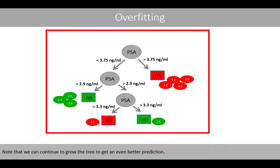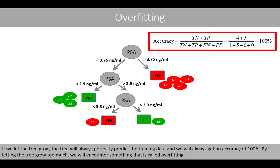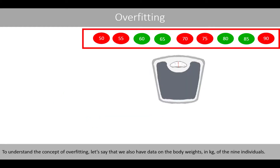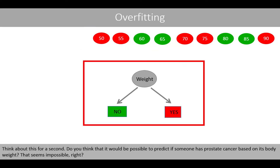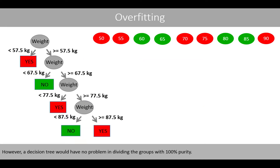Note that we can continue to grow the tree to get an even better prediction. If we let the tree grow, the tree will always perfectly predict the training data and we will always get an accuracy of 100%. By letting the tree grow too much, we will encounter something that is called overfitting. To understand the concept of overfitting, let's say that we also have data on the body weights in kilos of the nine individuals. Do you think that it would be possible to predict if someone has prostate cancer based on his body weight? That seems impossible — however, a decision tree would have no problem in dividing the groups with 100% purity.